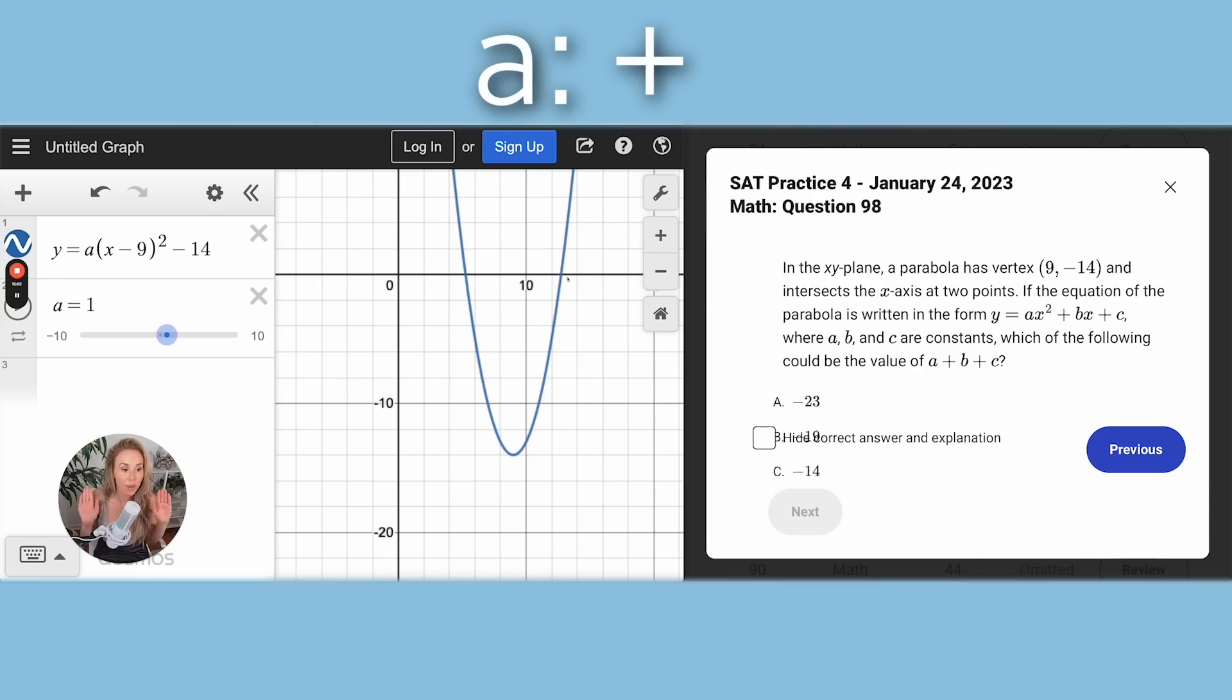Okay. So we know A needs to be positive. If we mess with this, look at once you get past a positive 0.1, oh, now it's flat and now it goes down and now it's not crossing anymore. So A's got to be a positive number.